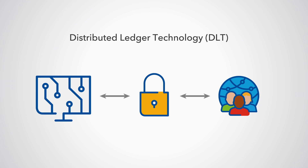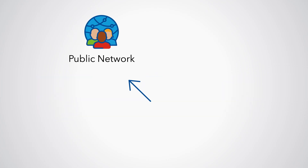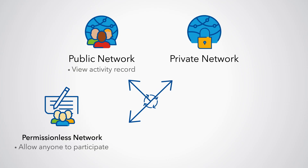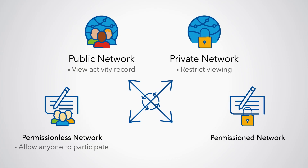This record, or data, can contain transactions, asset holdings or even identities. Public networks allow anyone to view the activity record, and permissionless networks allow anyone to participate in it. Private networks restrict viewing, and permissioned networks restrict write access.